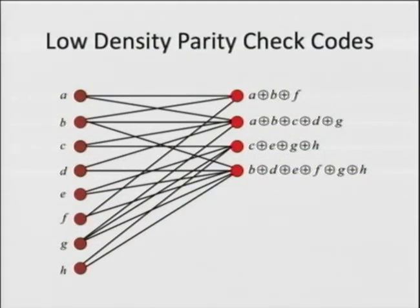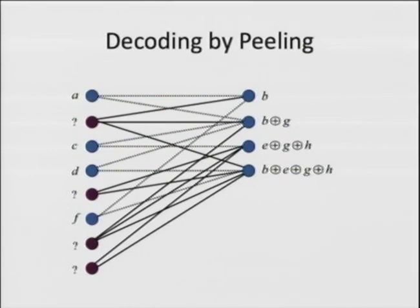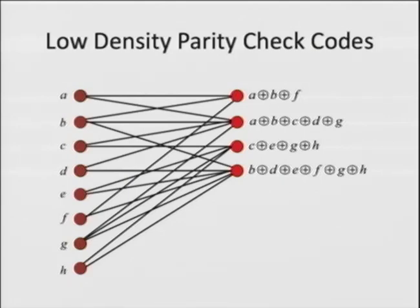Peeling algorithms came up a lot in my work on low-density parity check codes. Think of the message symbols you want to send on the left, and some redundancy — the XOR of some original message symbols — on the right. You can think of this naturally as a graph. The basic decoding algorithms that work are by peeling. The blue dots are things that have arrived successfully, and the reddish things with question marks are missing. This first dot was the XOR of A, B, and F. If you have A and F arrive, you can XOR those values back in.